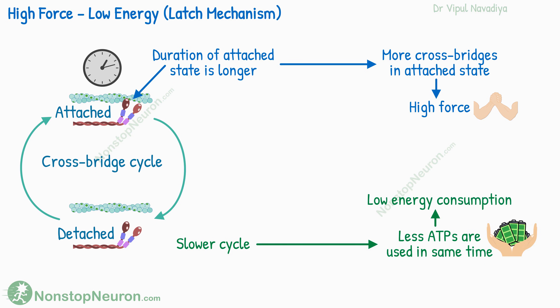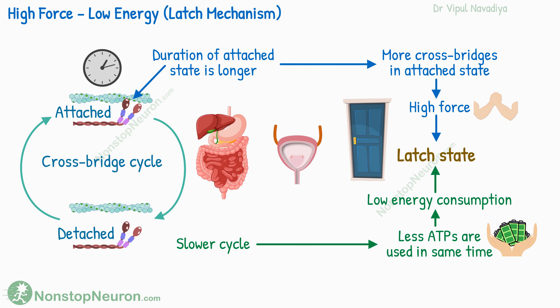In fact, once a muscle reaches its full contraction, the amount of continuing excitation can be significantly reduced while maintaining the muscle's full force of contraction, and yet the energy consumption in this state would be minimal. This low energy consumption, high-tension state is referred to as the latch state. It's like latching a door once you have closed it, so you don't have to keep putting in extra energy to keep it closed. This is beneficial for the body's overall energy economy because many organs like the intestine and urinary bladder maintain tonic contraction almost indefinitely. Thanks to the latch mechanism, such tonic contractions are maintained for a long period with minimum energy consumption.